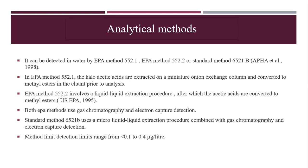Now we will discuss analytical methods. MCA can be detected in water by three methods: EPA method 552.1, EPA method 552.2, or standard method 6521B. In EPA method 552.1, the haloacetic acids are extracted on a miniature anion exchange column and are converted to methyl esters prior to analysis.